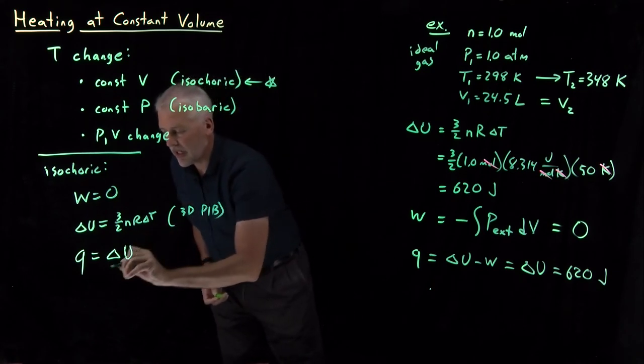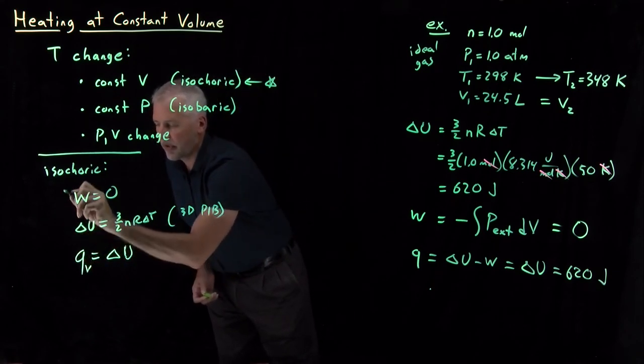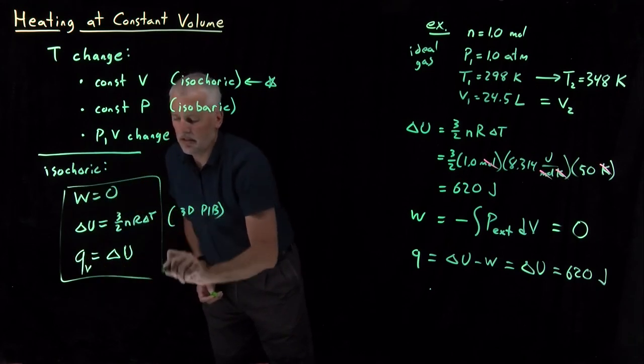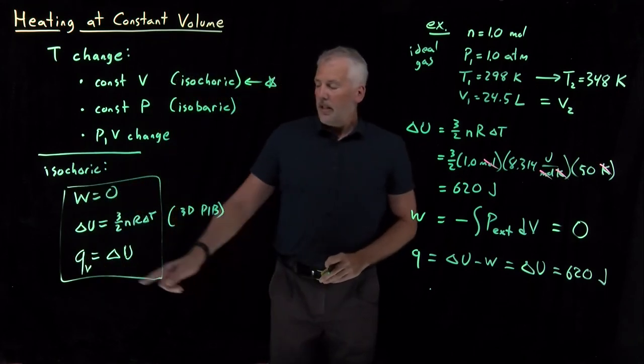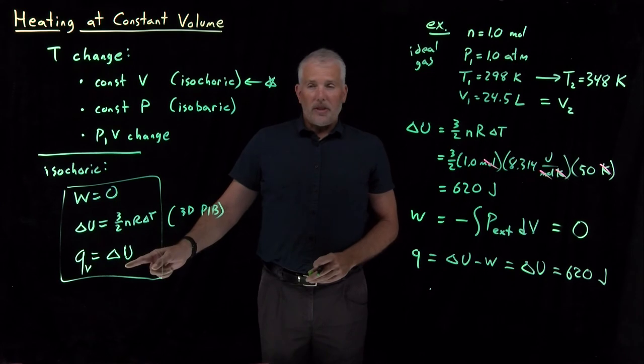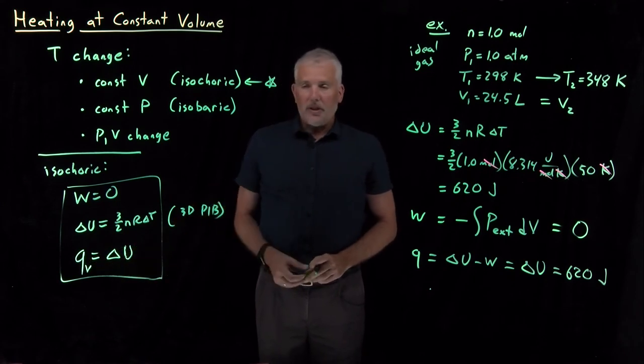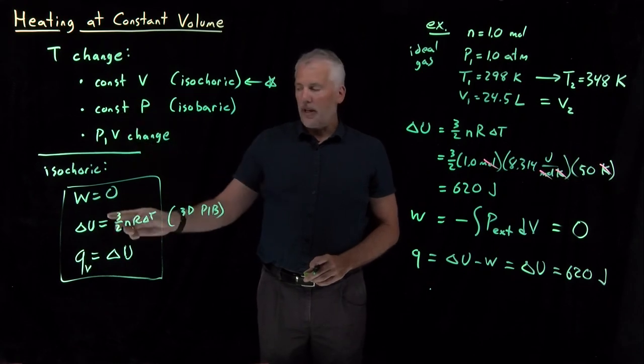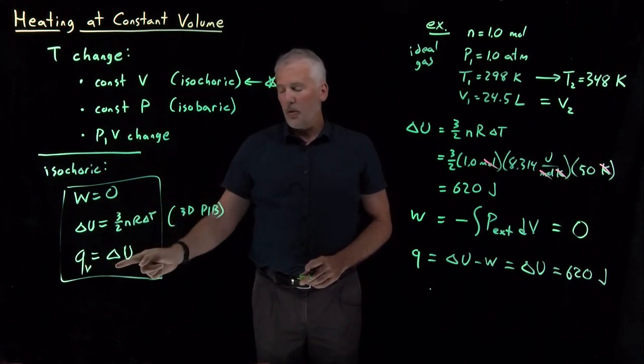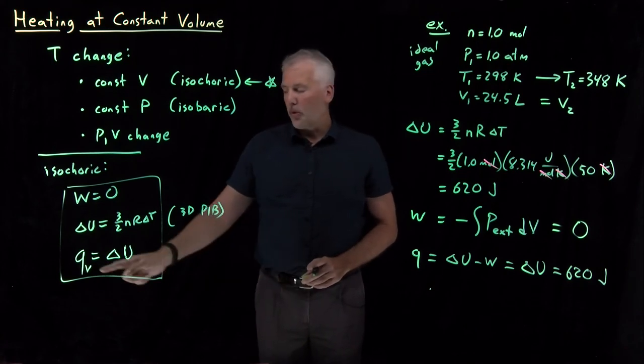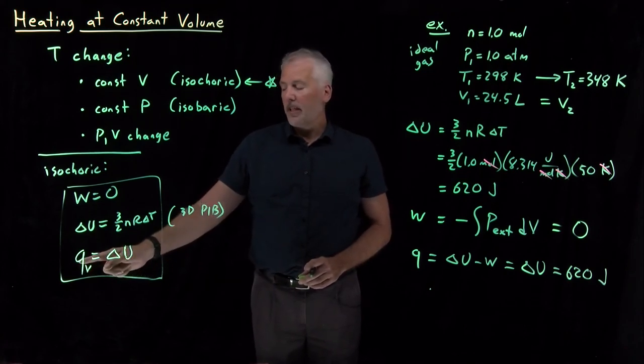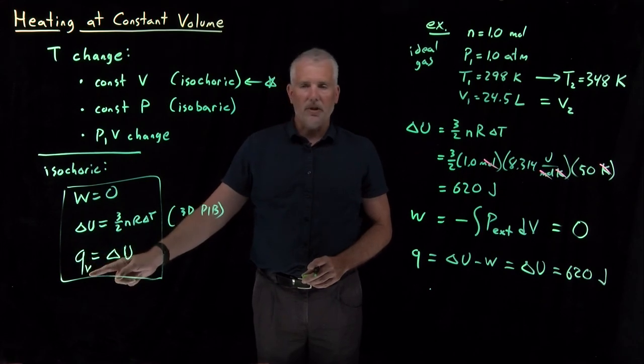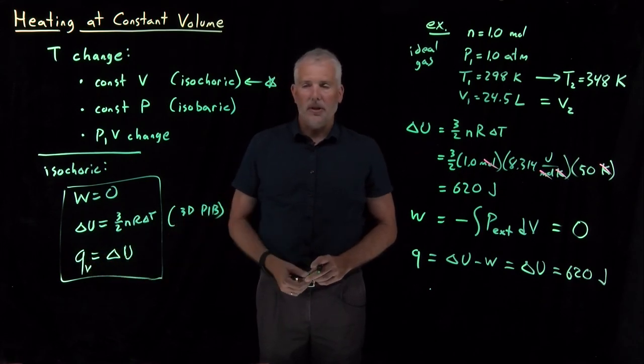And we often remind ourselves of that, the equation that we can put in a box. It's not that Q is always equal to delta U, but for a process that has constant volume and therefore doesn't have any PV work associated with it, then the Q and the delta U will be the same. So we remind ourselves that it's a constant volume process by saying Q sub V, the Q at constant volume, is always equal to delta U.